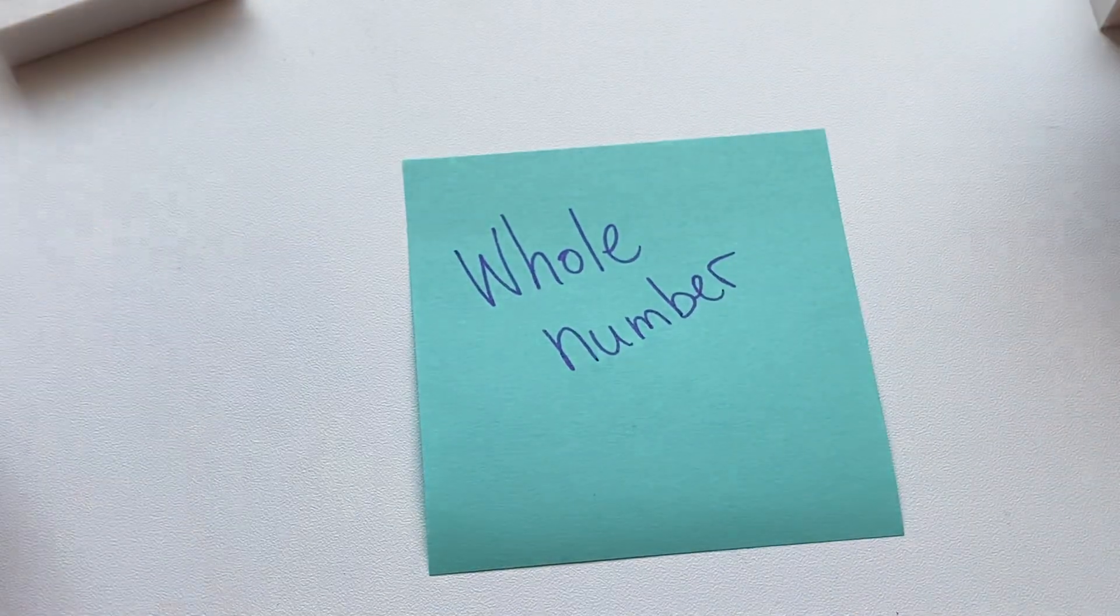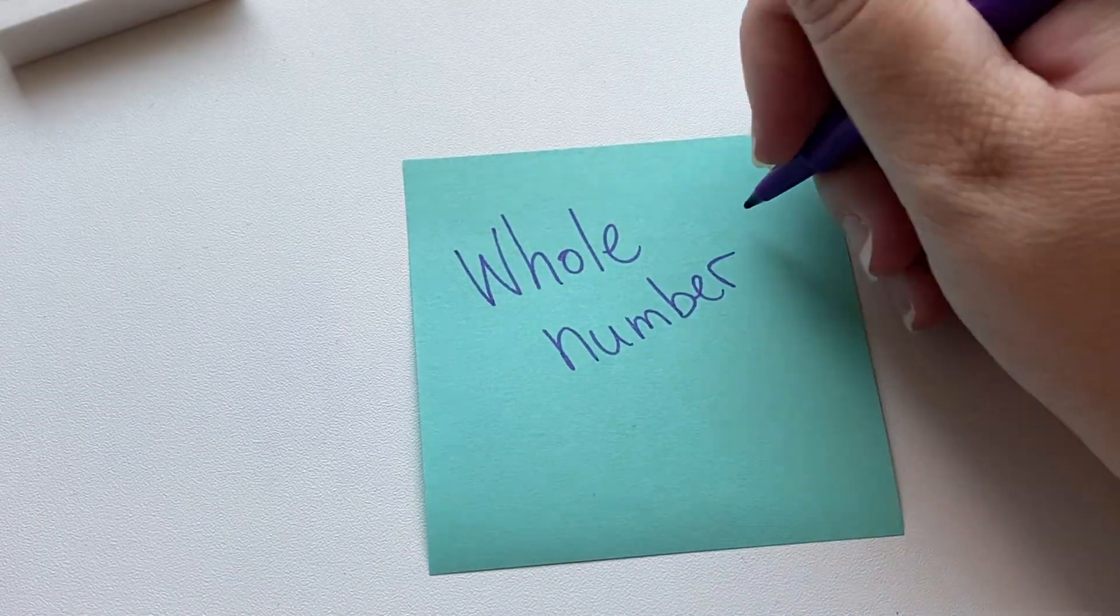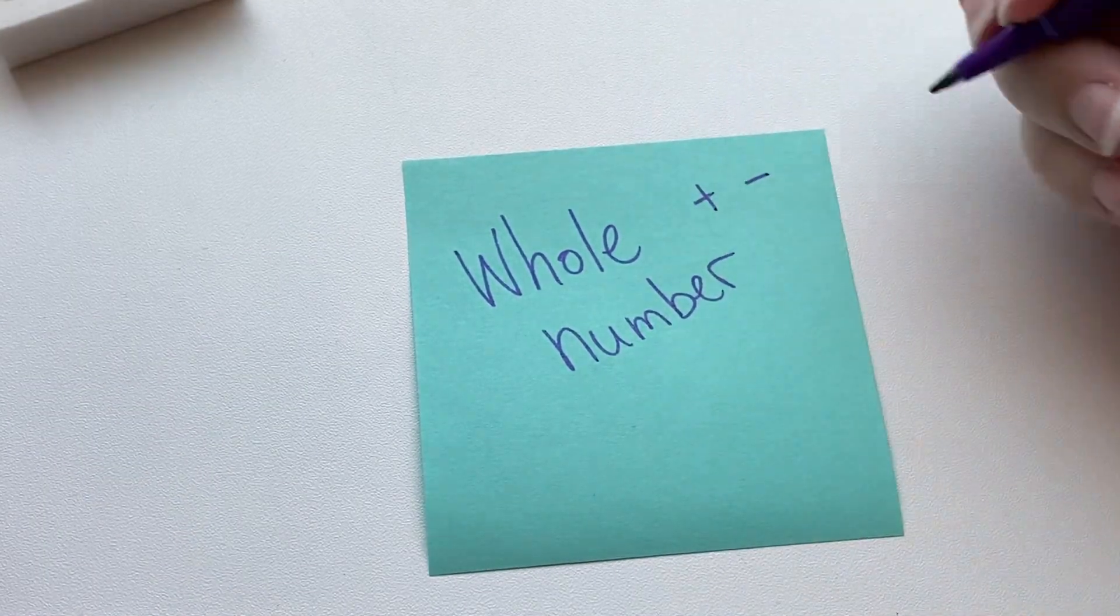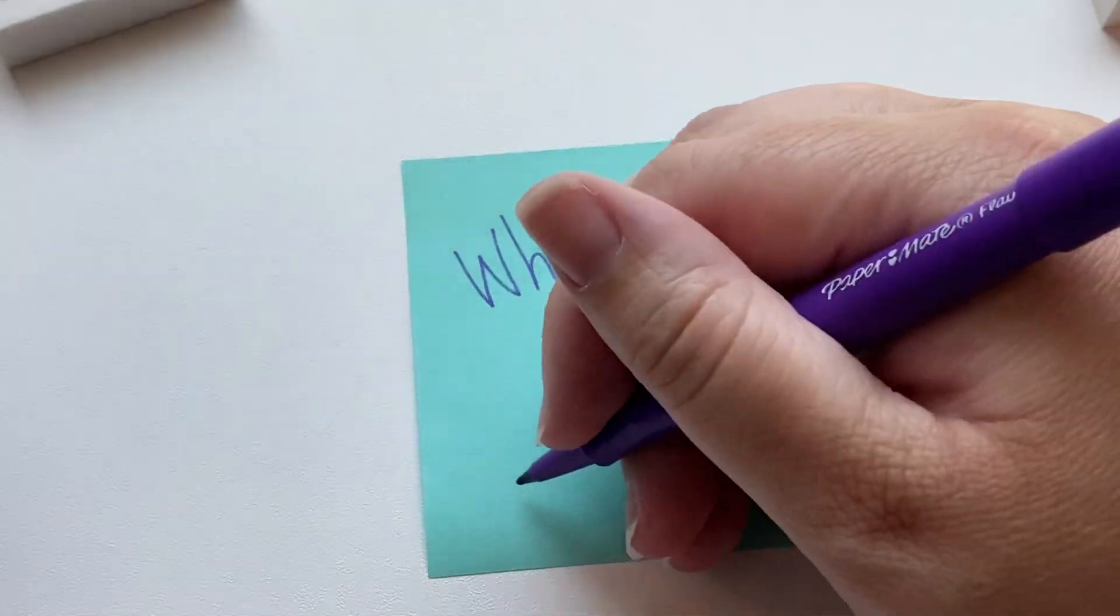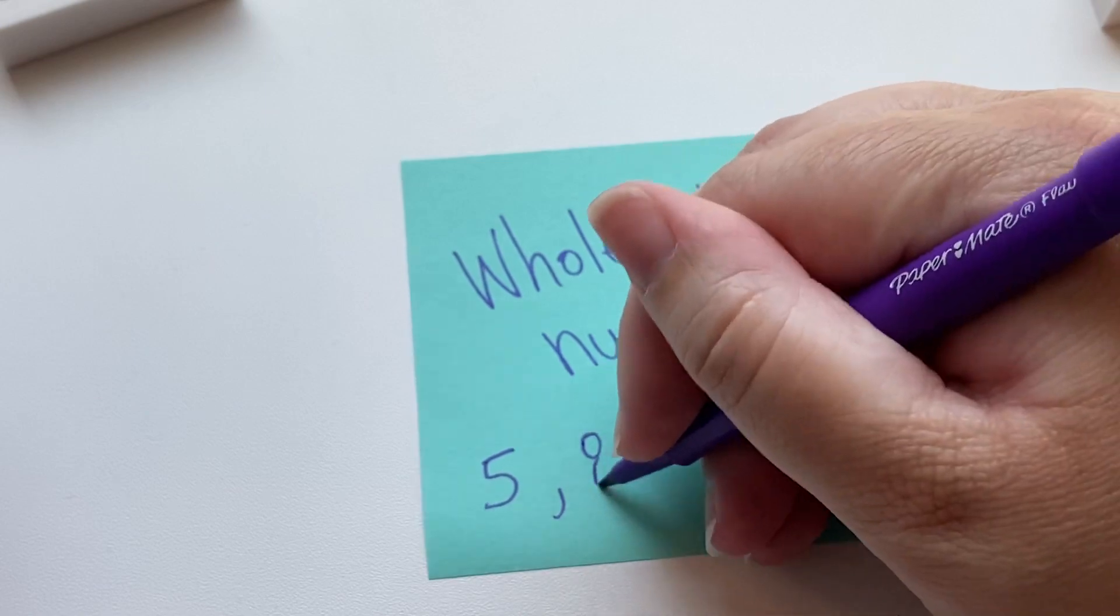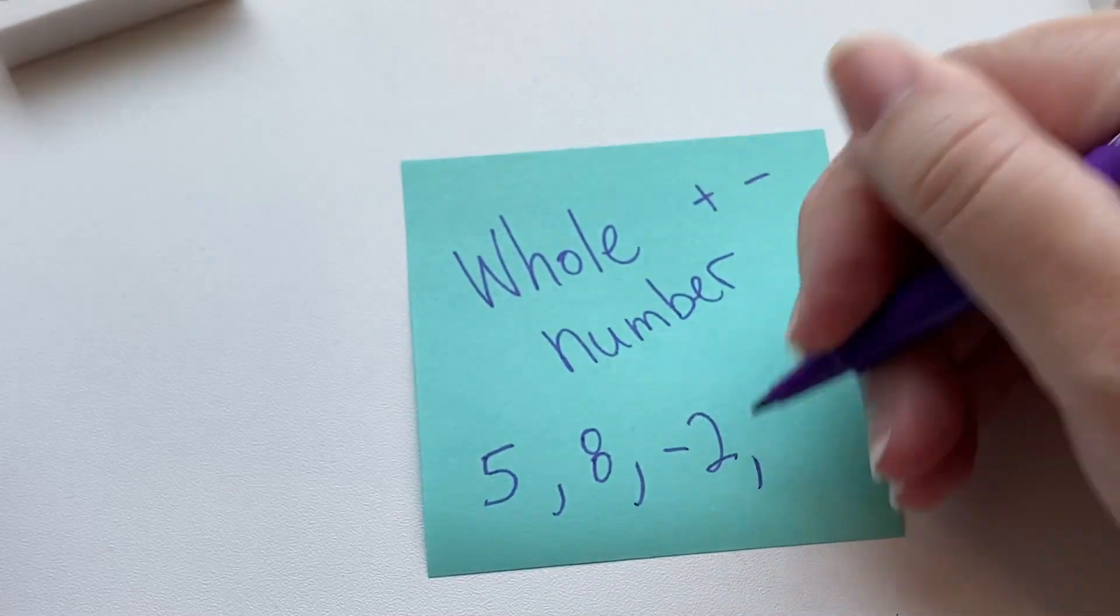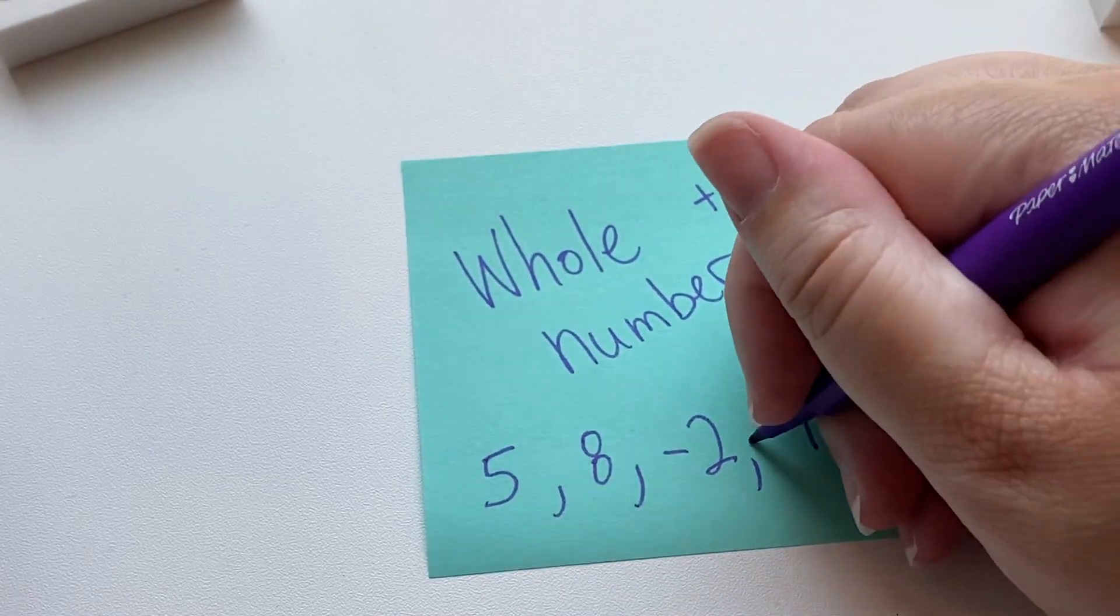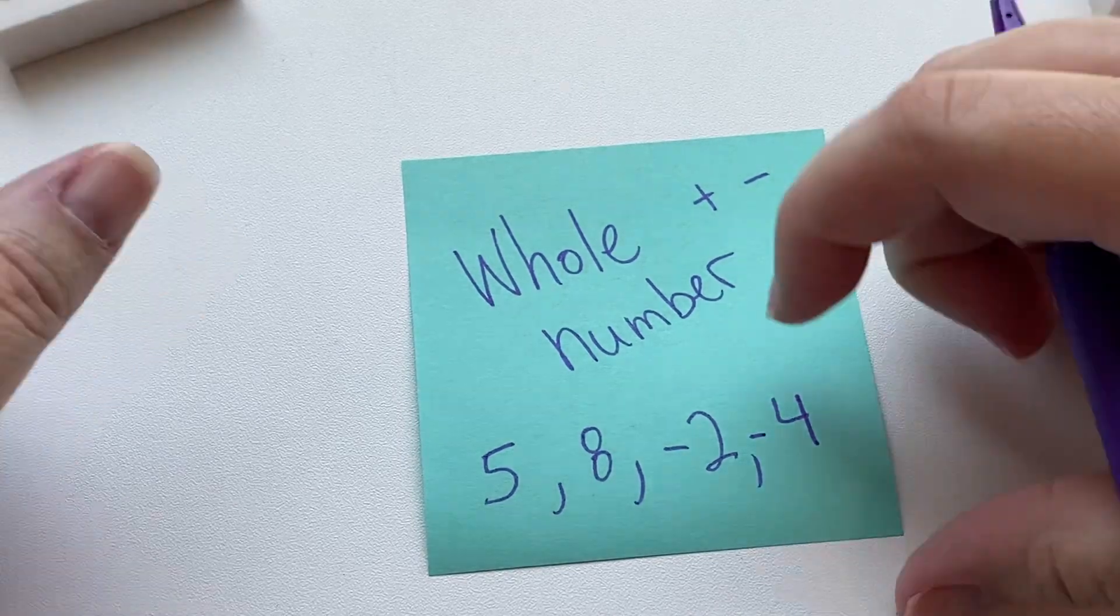An integer is another term for a whole number. It can be positive or negative. So some examples of integers are 5, 8, -2, -4. Those are some integers, and then when we add them...